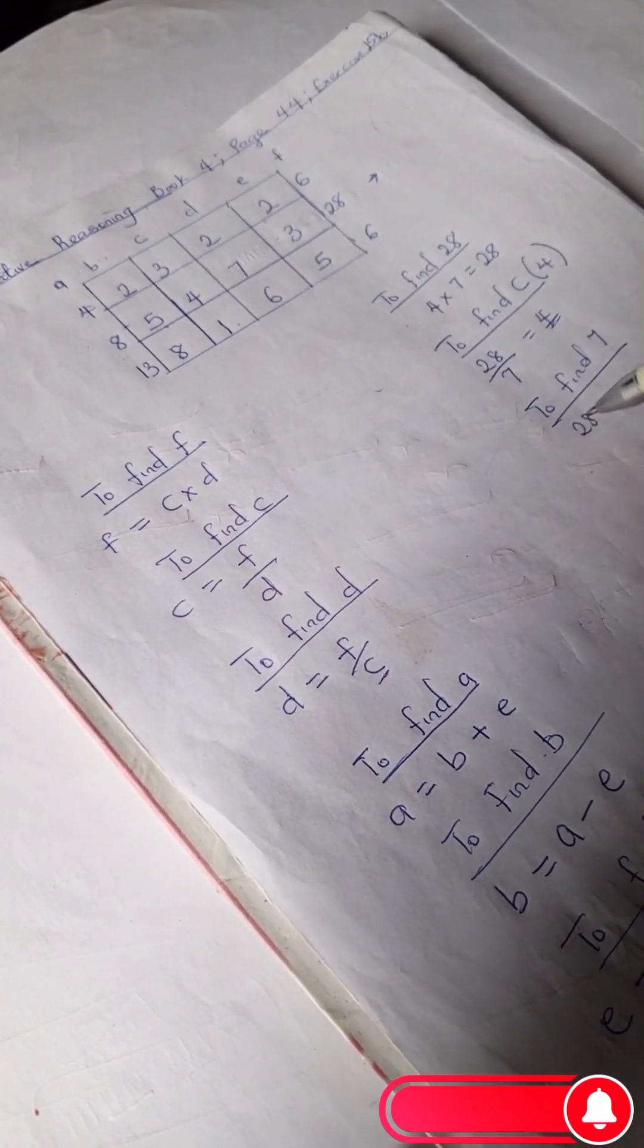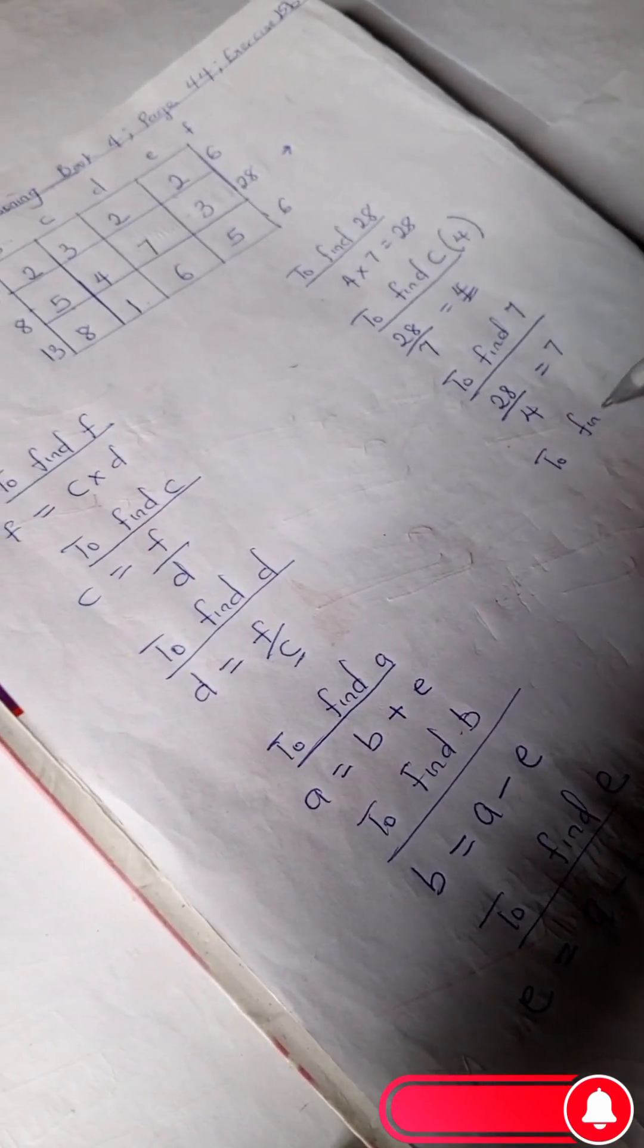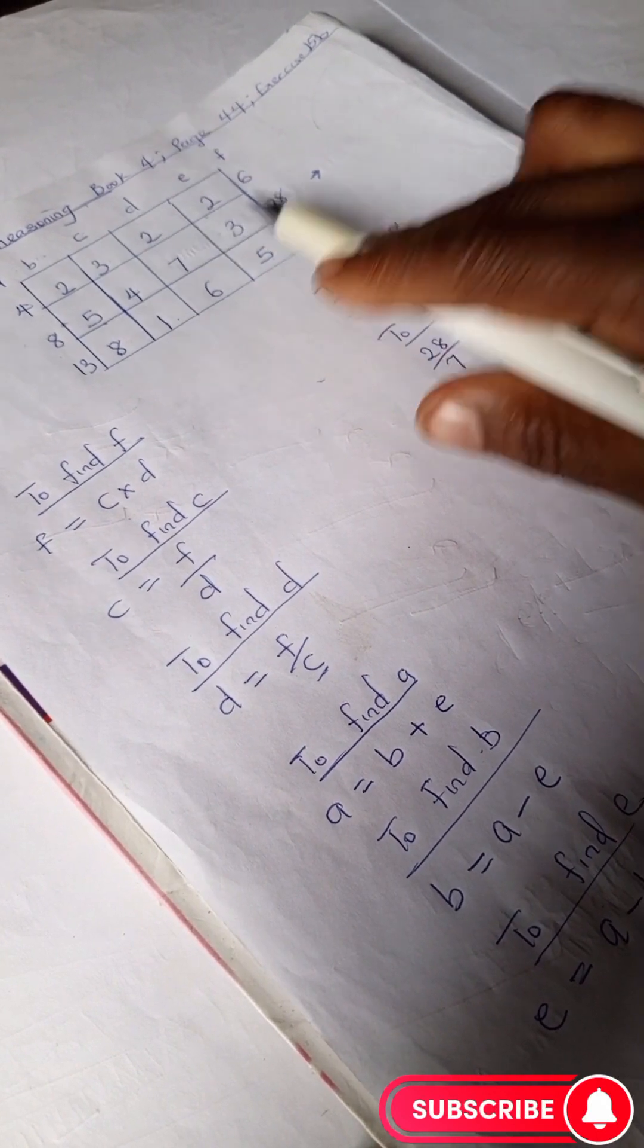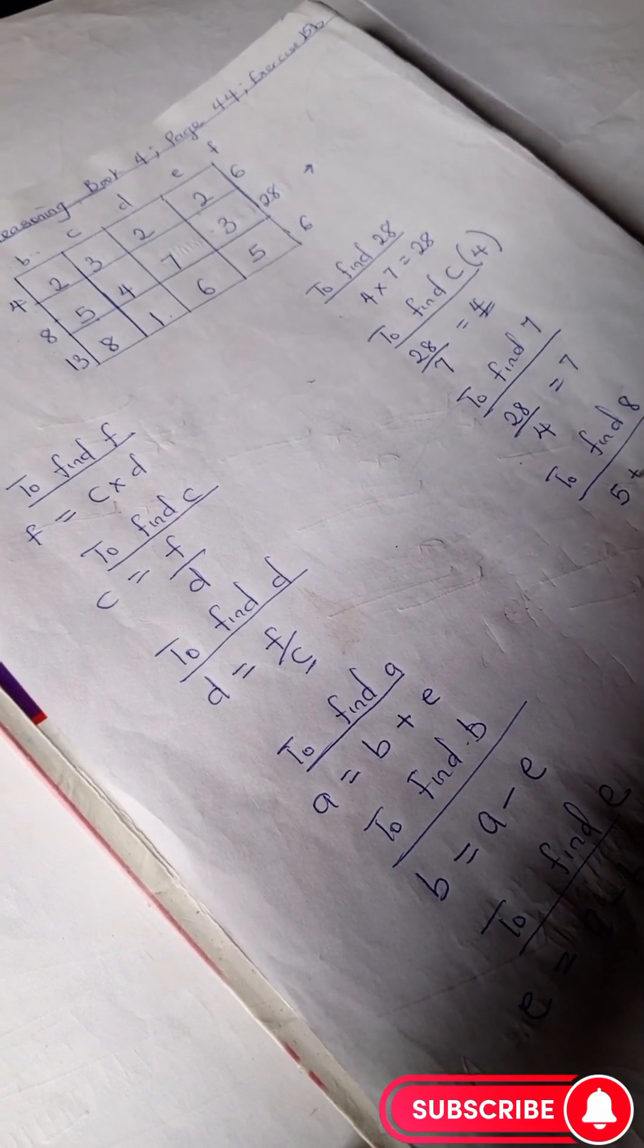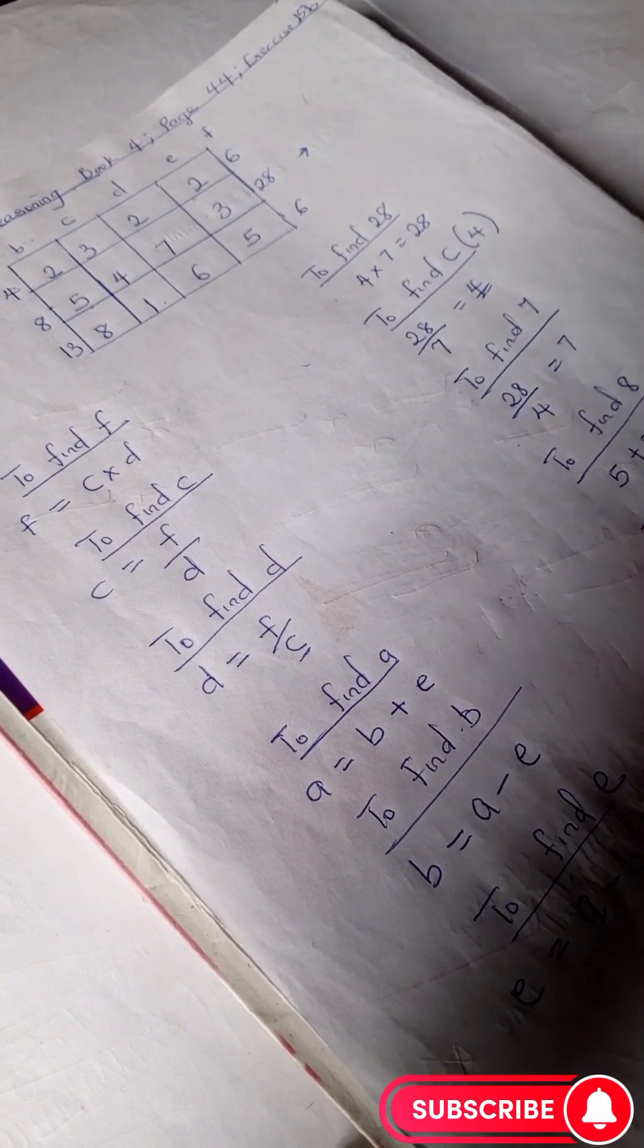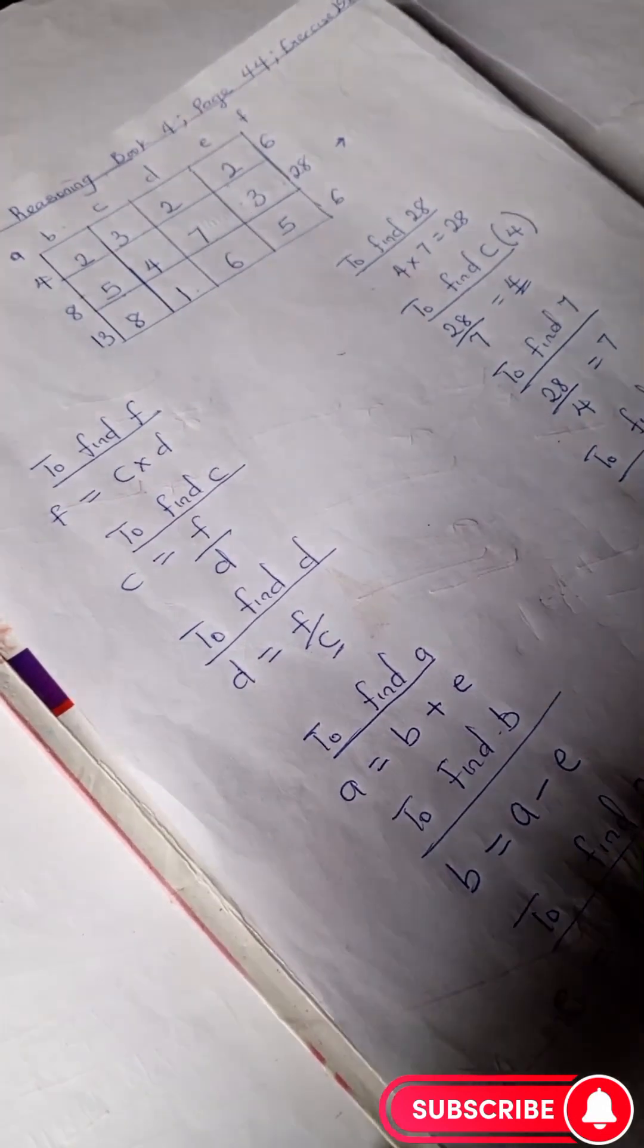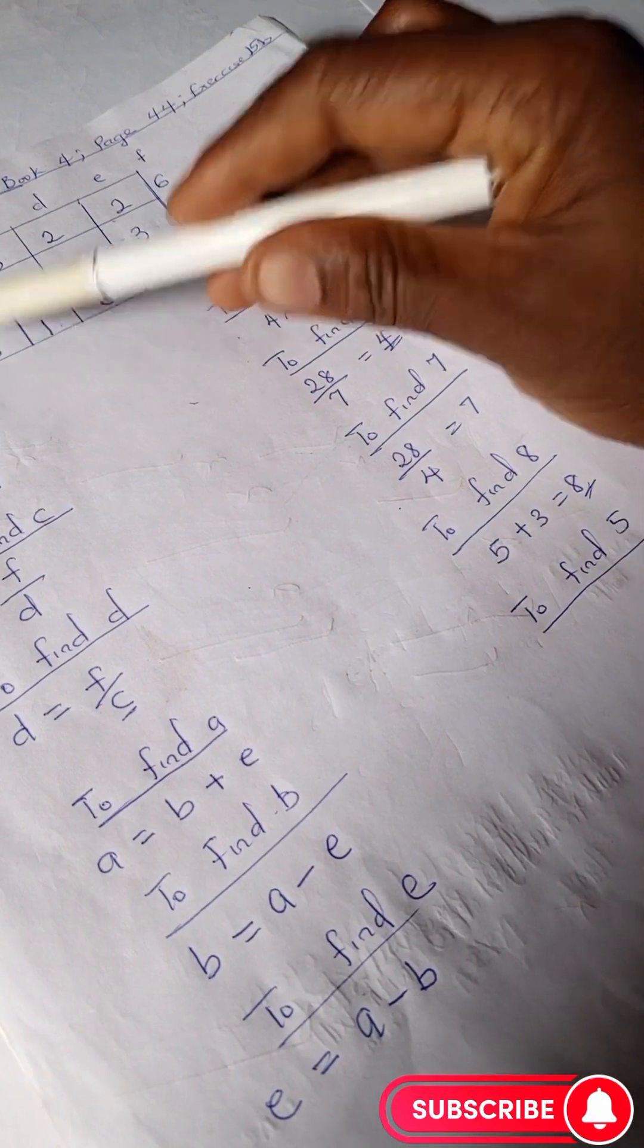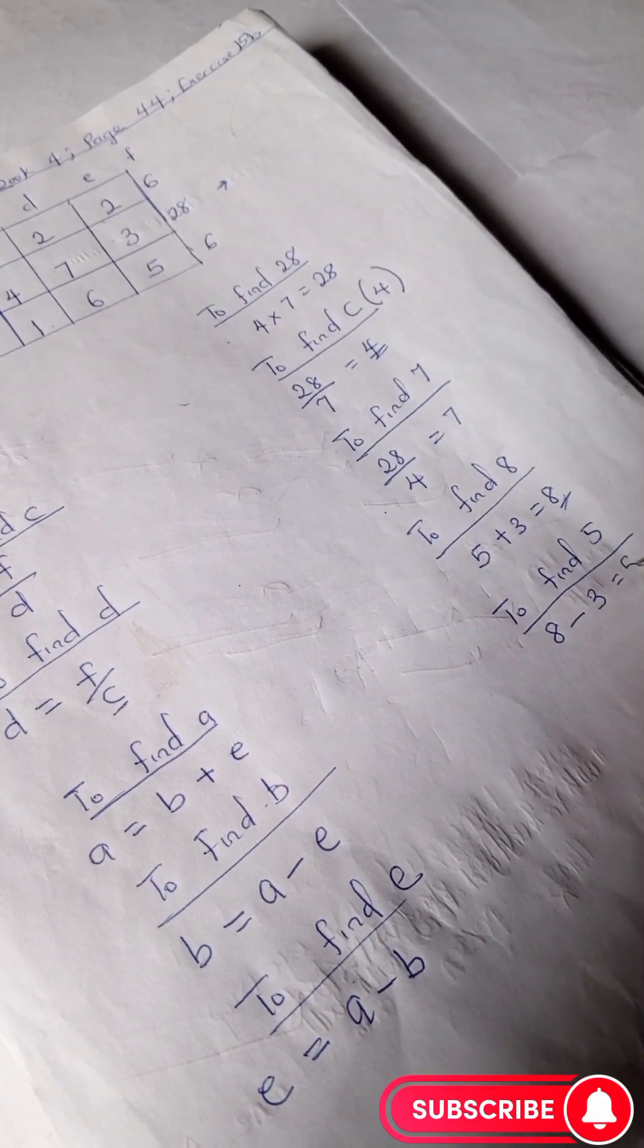And to find A, which is 8, we have our 5 plus 3, which is 8. And to find E, which is 8, we have 8 minus 3, which is our B, so our answer is 5.